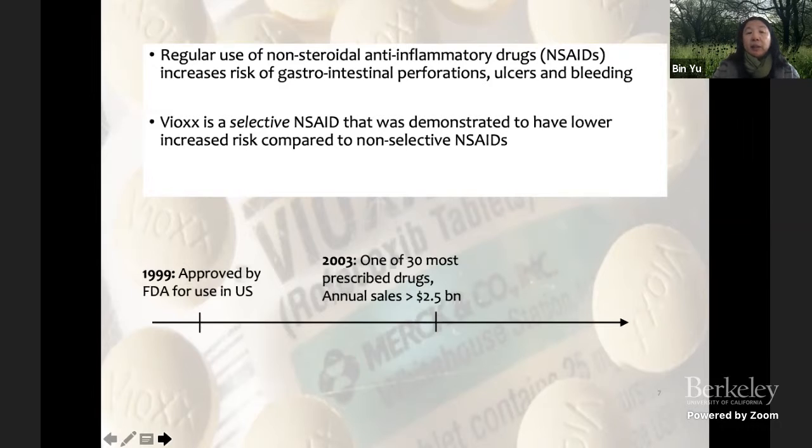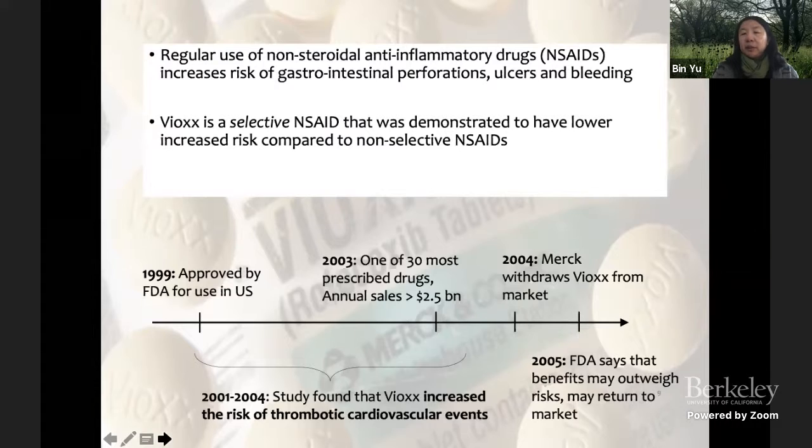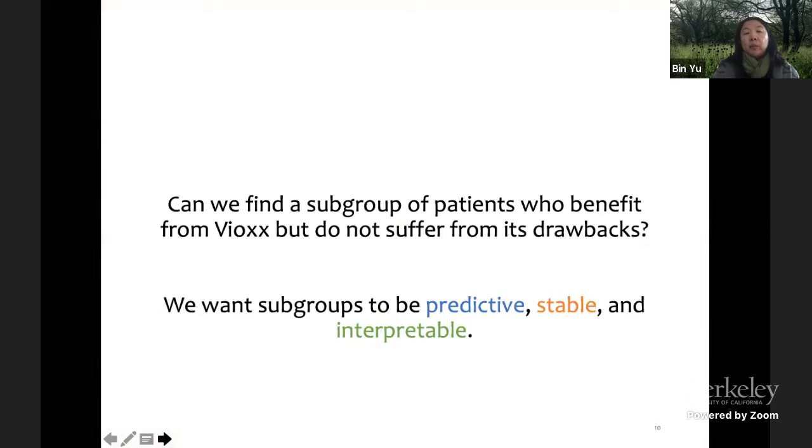The trial started in 1999 and Merck pulled it out in 2004 and there's kind of a little reversal trying to say that maybe can return to market. What we're aiming to do, because overall has been proven that it's not good for the whole population, but we're looking for subgroups that maybe can control the drawbacks but at the same time make it useful for people.